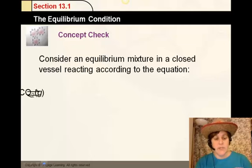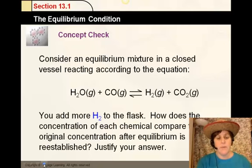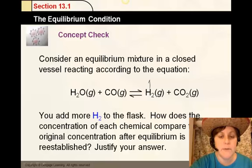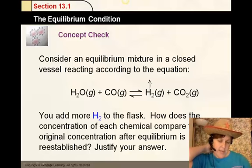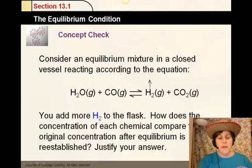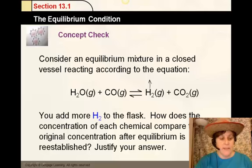Let's think of this situation. Again, the same reaction, but you add more H2 to the flask. How does the concentration of each chemical compare to its original after equilibrium is reestablished? We have more H2, and that would allow the reaction to move to the left, because you'd have more of that product which could be considered a reactant. It would shift to the left and produce more water and carbon monoxide, which would eventually reduce the amount of hydrogen and the concentration of CO2 in the end.